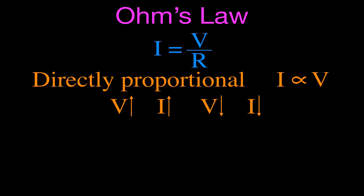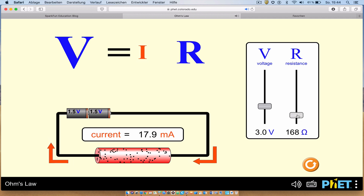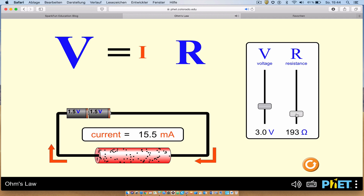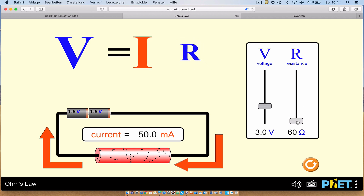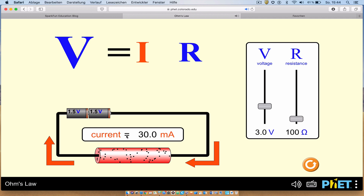Now let's go back to our simulation and see how that looks with the resistance. We're going to change the resistance — we can increase and decrease it — to see how that affects the current. When we increase the resistance, you'll see it was 100, now it's going up to 200, 300 — the R is getting bigger. And when we increase the resistance, you'll notice that the current decreases. More resistance, less current. If we decrease the resistance, then you'll notice that the current increases. You can see that in the current reading and the size of the arrows for the direction of the current.